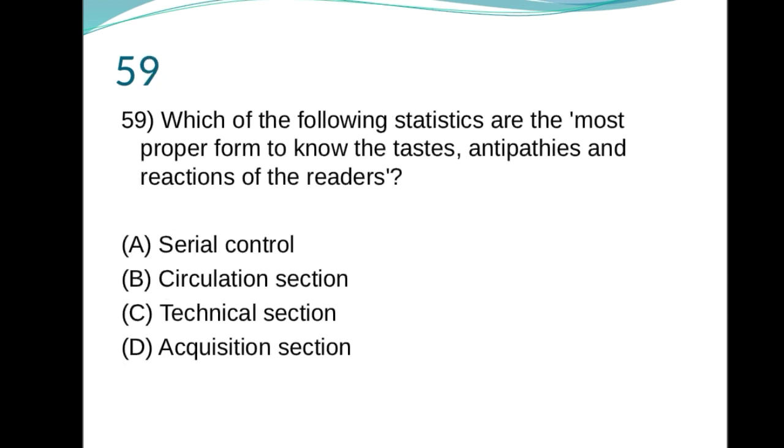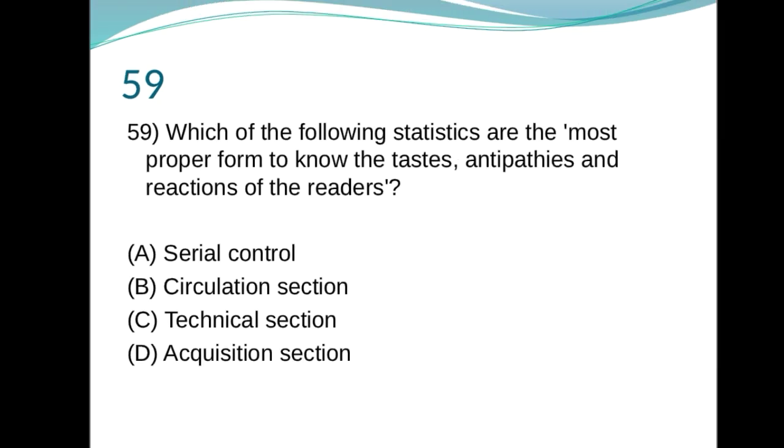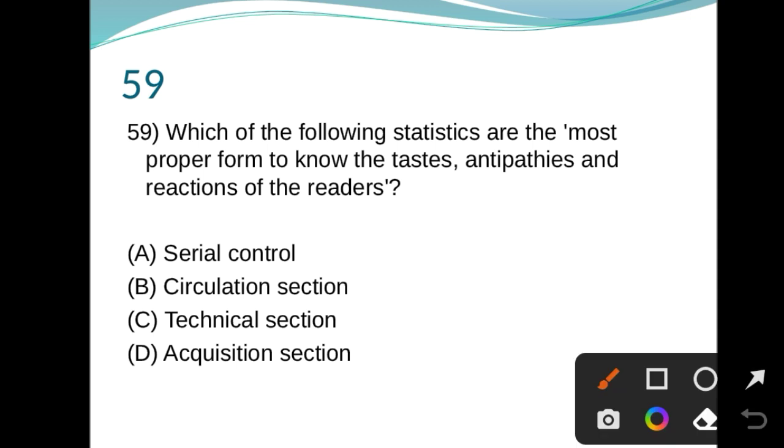59. Which of the following statistics are the most proper form to know antipathy and reactions of the readers? Serial control, circulation, technical section, acquisition. Here B is the right answer, circulation section.